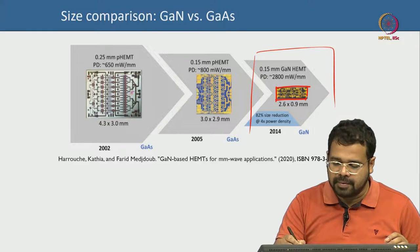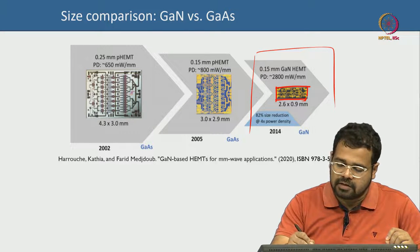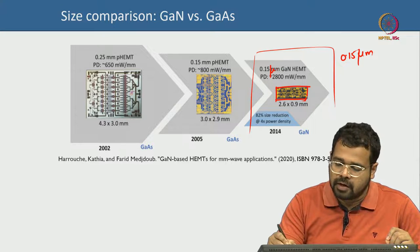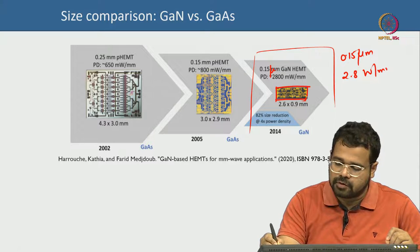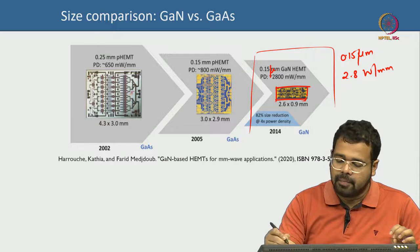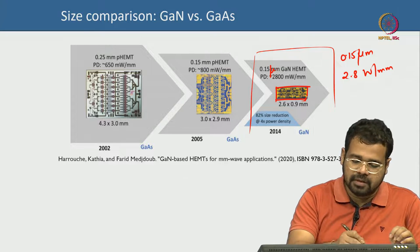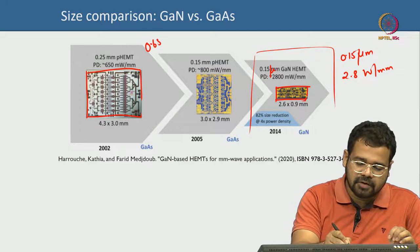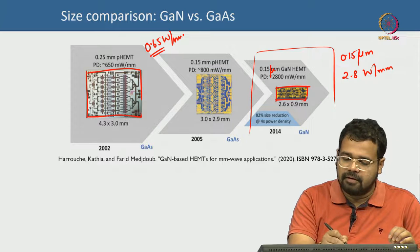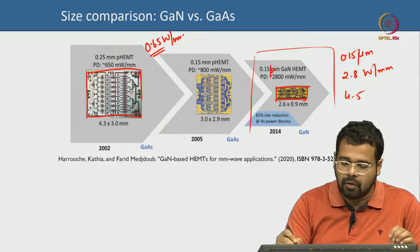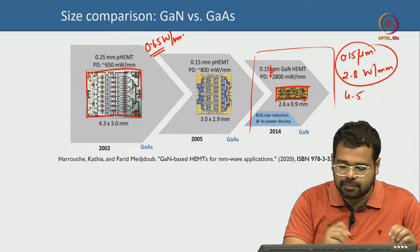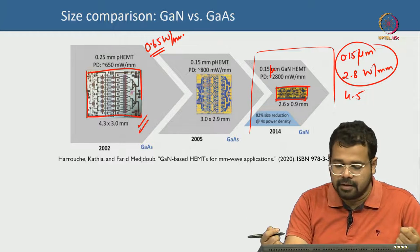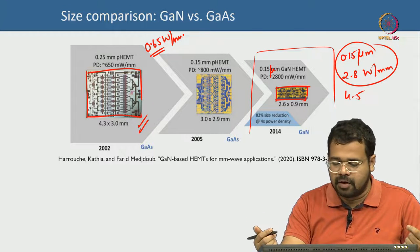This 0.15 µm gate length GaN technology delivers 2.8 W/mm of saturated power. In comparison, a pseudomorphic HEMT at 0.25 µm technology gives only 0.65 W/mm — roughly 4 to 5 times lower — for a chip size that is probably 5 times bigger. That larger pHEMT chip gives you 4 times lower output power density.